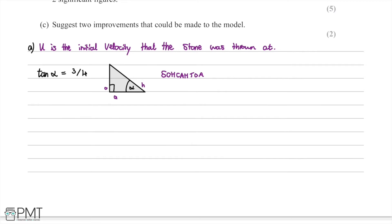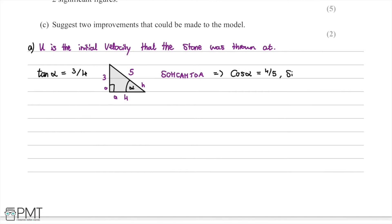From the triangle, with tan alpha equal to 3 over 4, we place 3 as the opposite and 4 as the adjacent. Using Pythagoras, the hypotenuse is 5. Therefore, cos alpha equals adjacent over hypotenuse, which is 4 over 5, and sin alpha equals opposite over hypotenuse, which is 3 over 5. These values will be very useful as we proceed.